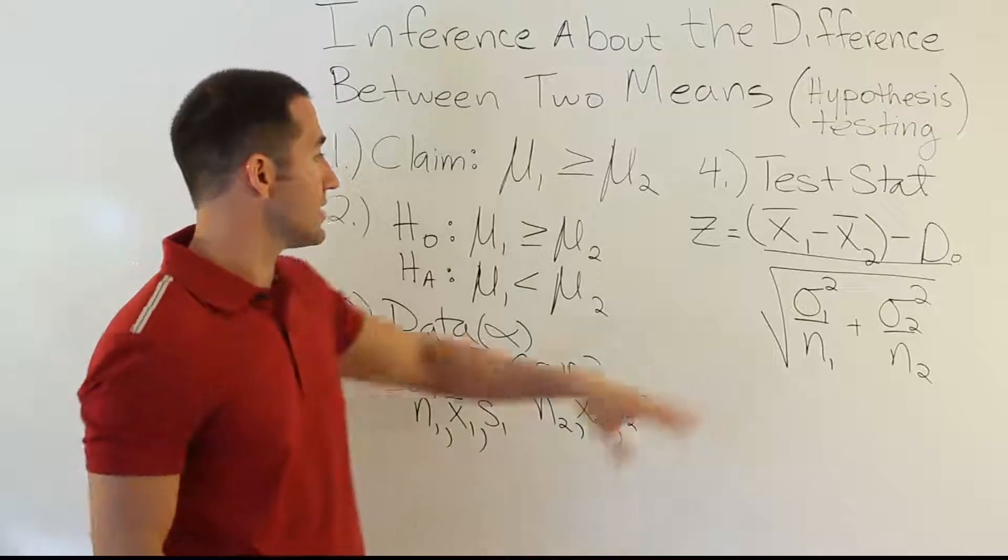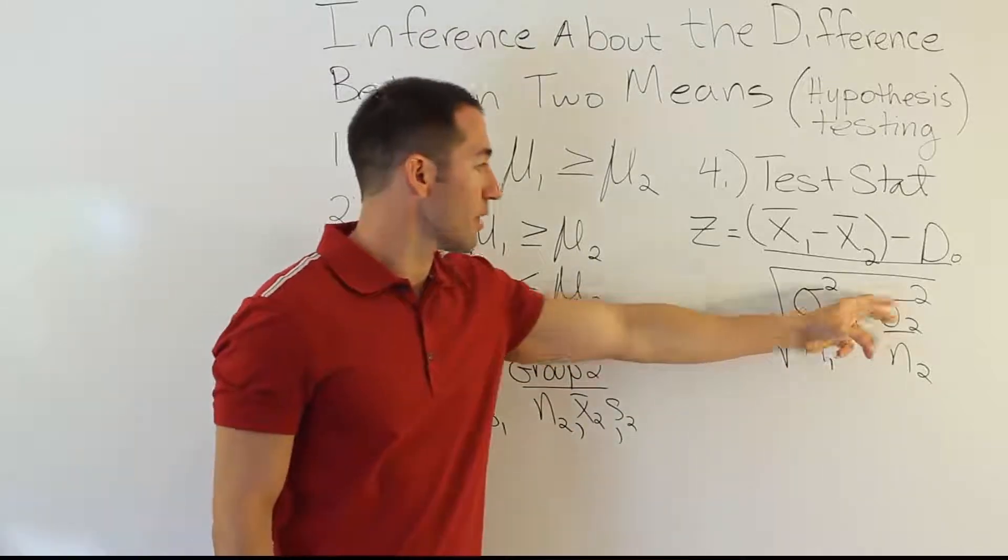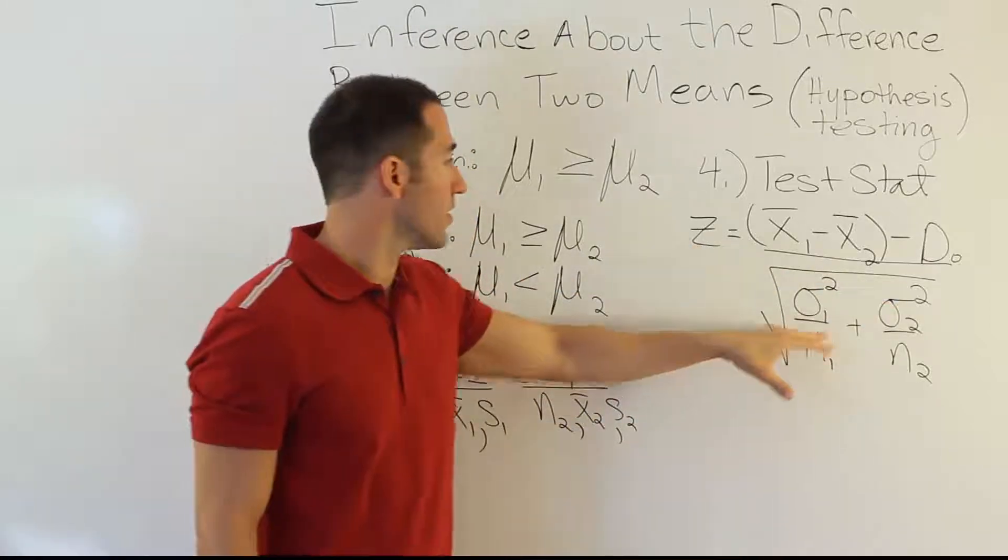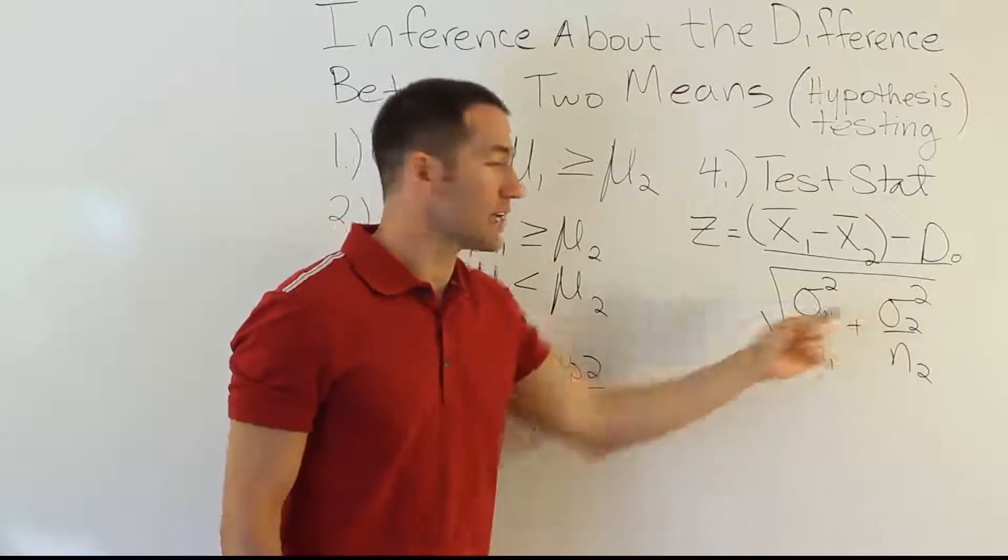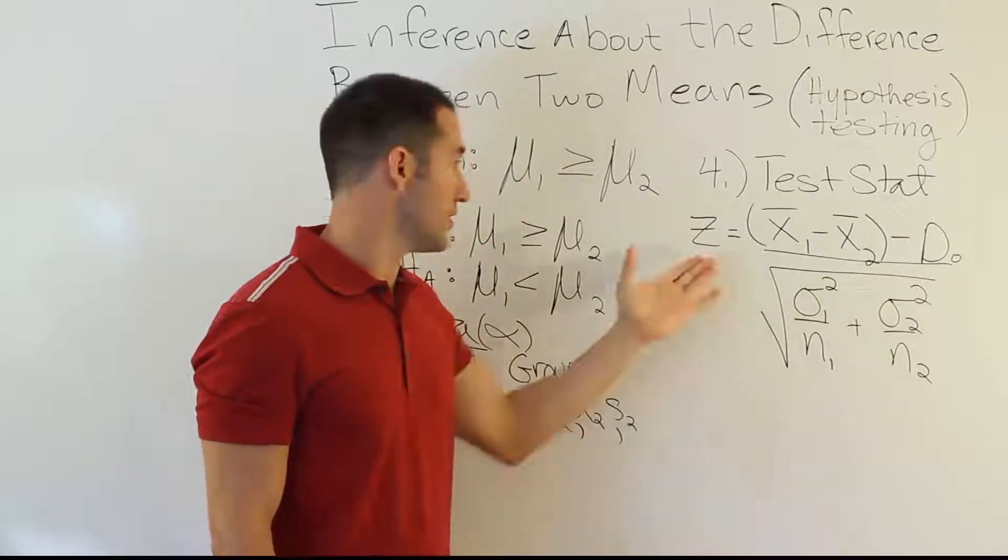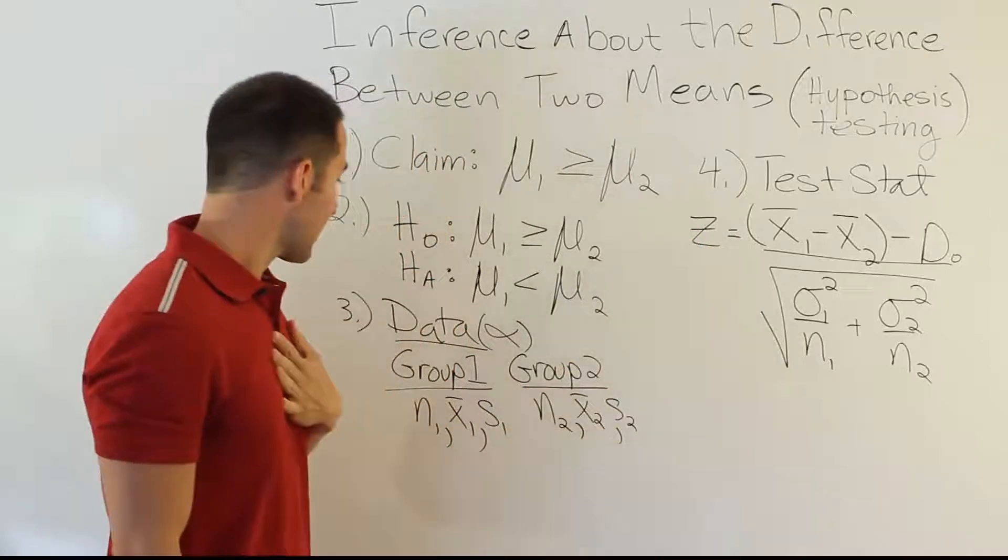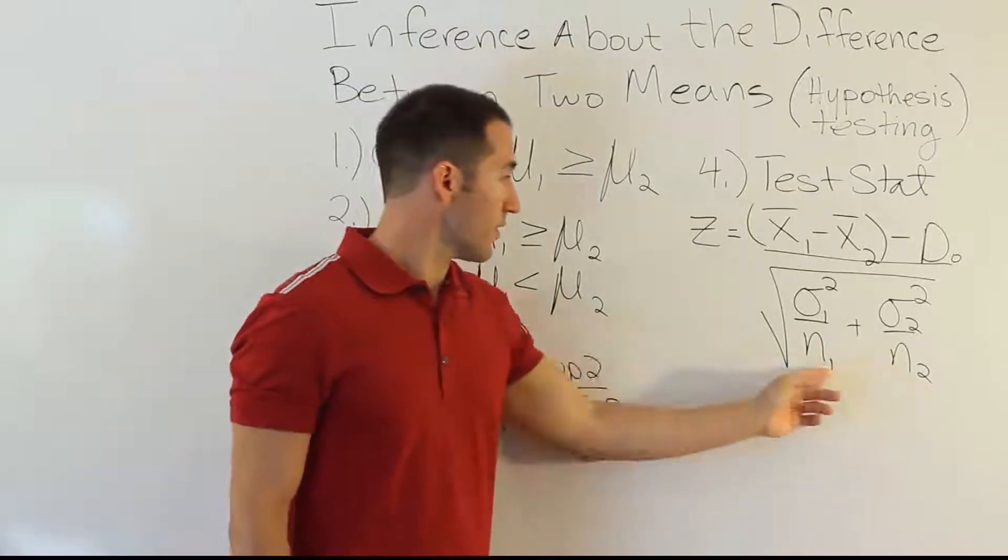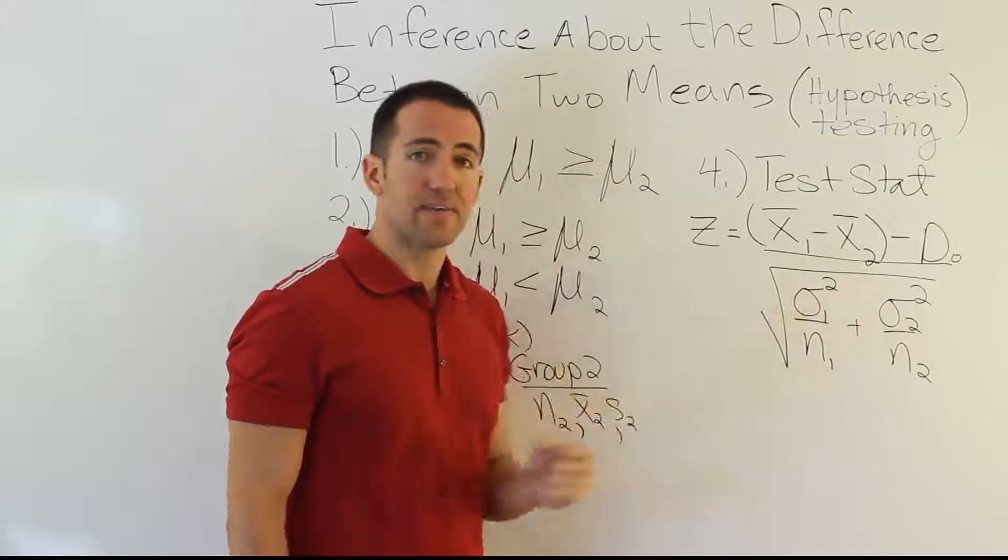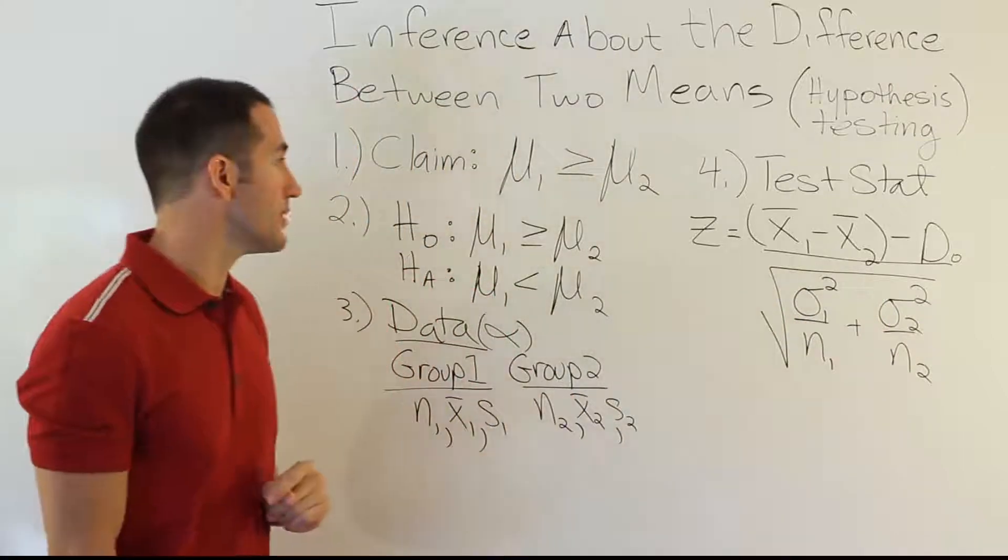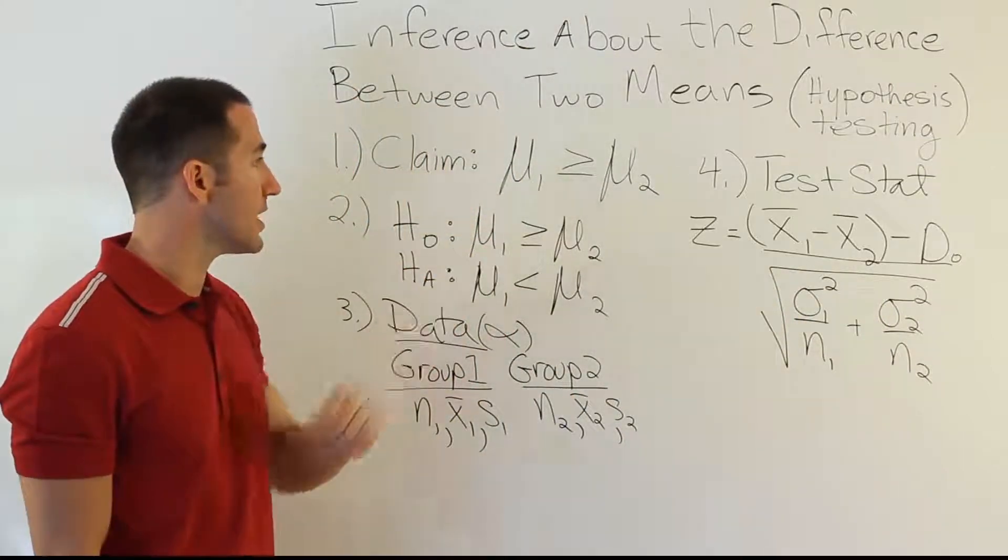If you're in my class, when the sample size is large, you can use the S as a substitute for that. In other classes, of course, you would actually need to know these quantities to use Z because the professors are often more formal and require you to actually know the population standard deviation to use Z. So you just have to go by what's okay in your classroom. In my classroom, as long as these N's are larger than 30, we can go ahead and use S's as a substitute for those population sigmas. That's alright. Okay, but either way, that's your test stat formula.